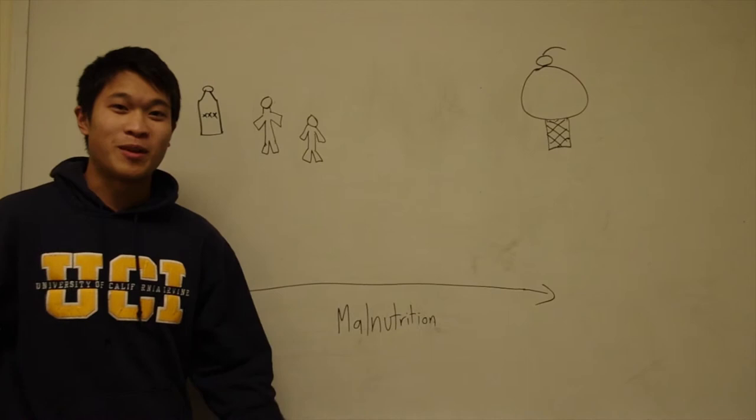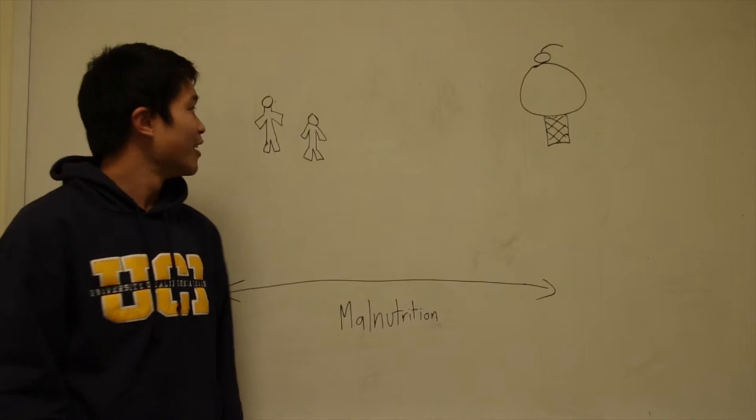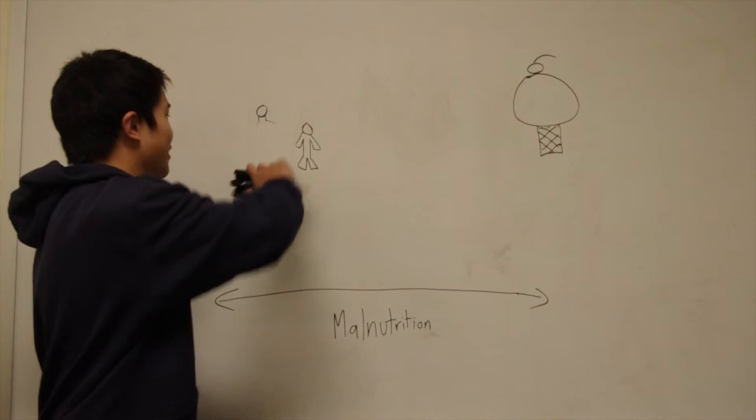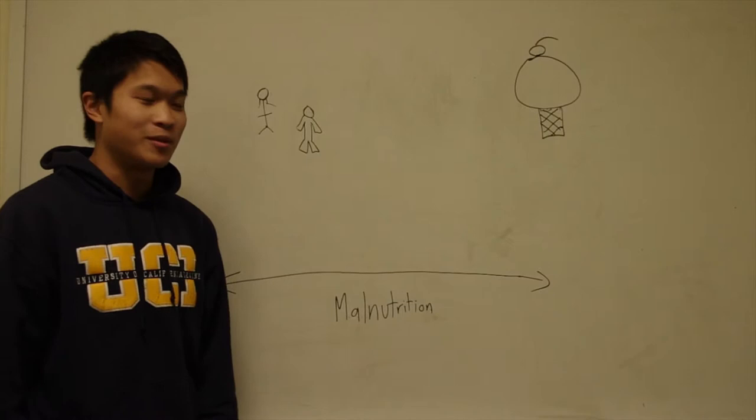A lot of college students face the problem of getting wasted. But around the world, another big problem is wasting. It isn't classified by alcohol, but classified by malnutrition, not getting enough nutrients. Wasting is classified as a low weight to age ratio. Let's show it like this.